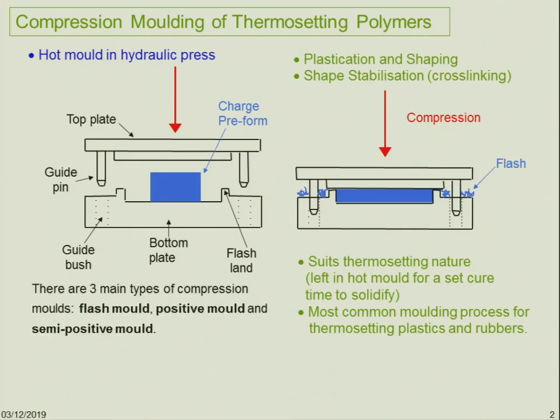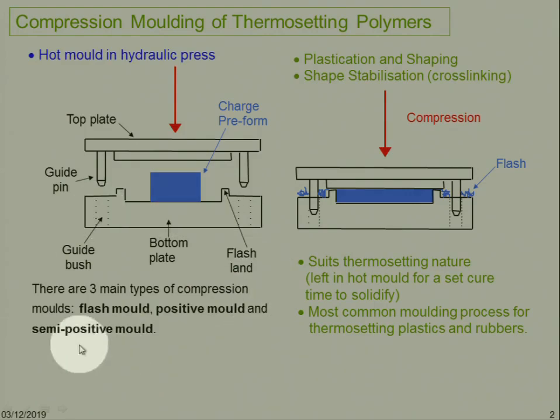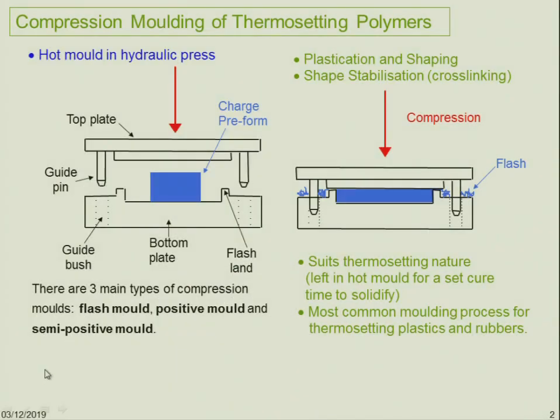The mold is the most important part in polymer processing and also the most expensive. There are three types of molds: the flash mold, positive mold, and semi-positive mold. The main difference between these molds is the way they control the thickness of the product. In compression molding, which is a very simple and old process, we cannot guarantee exact thickness, so the dimensions may not be as precise as in injection molding.